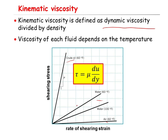For example, comparing the slopes of two lines, you can see that the viscosity of water at lower temperature — 60°F — is more than the viscosity of water at higher temperature. In other words, viscosity decreases when temperature increases.